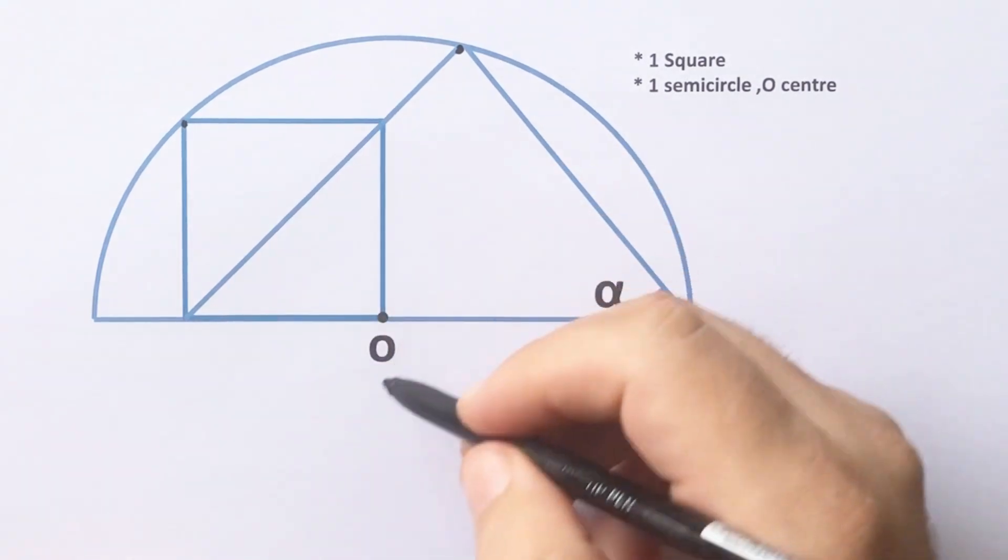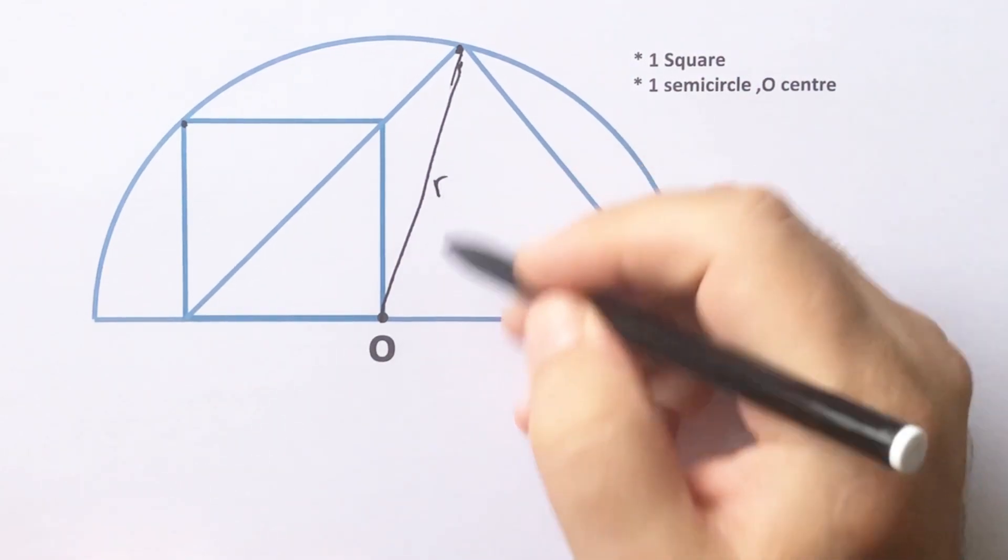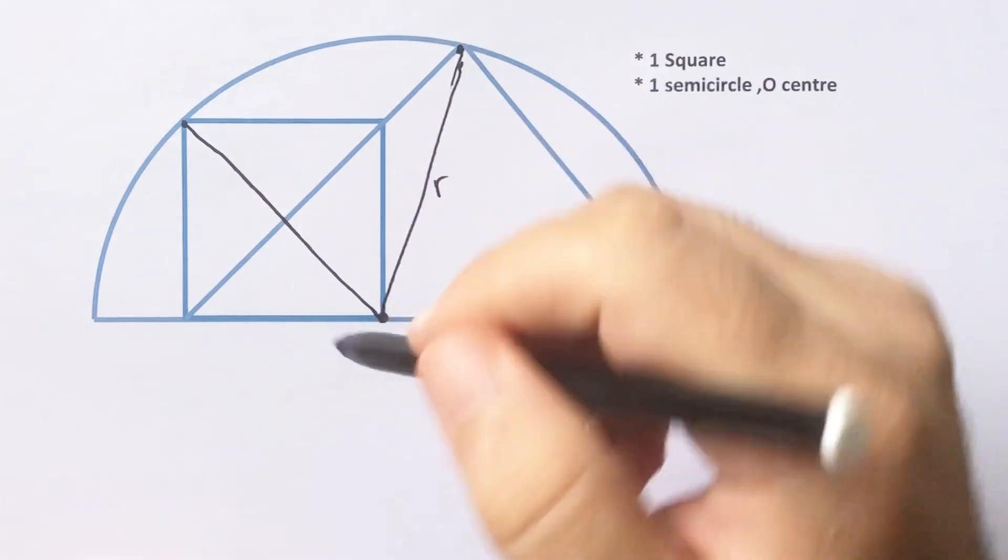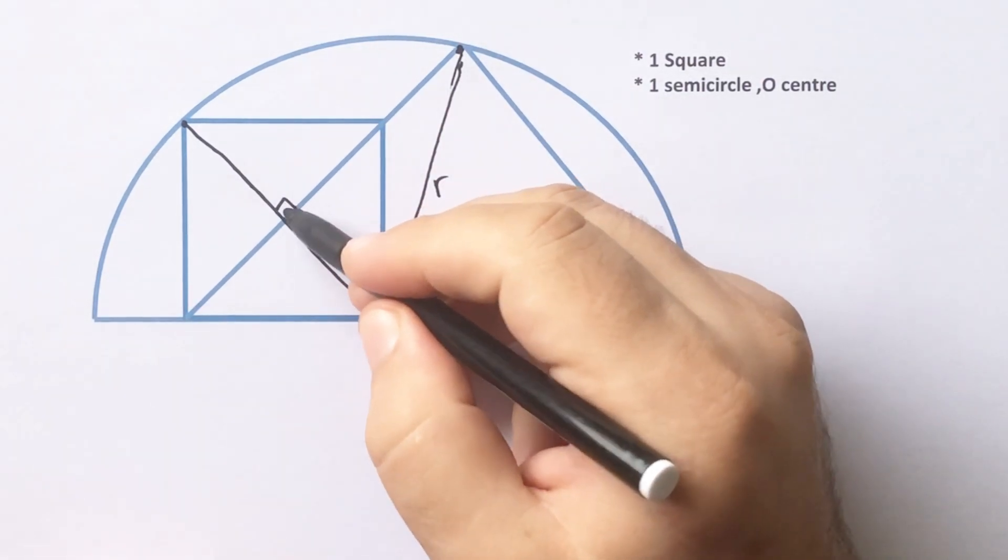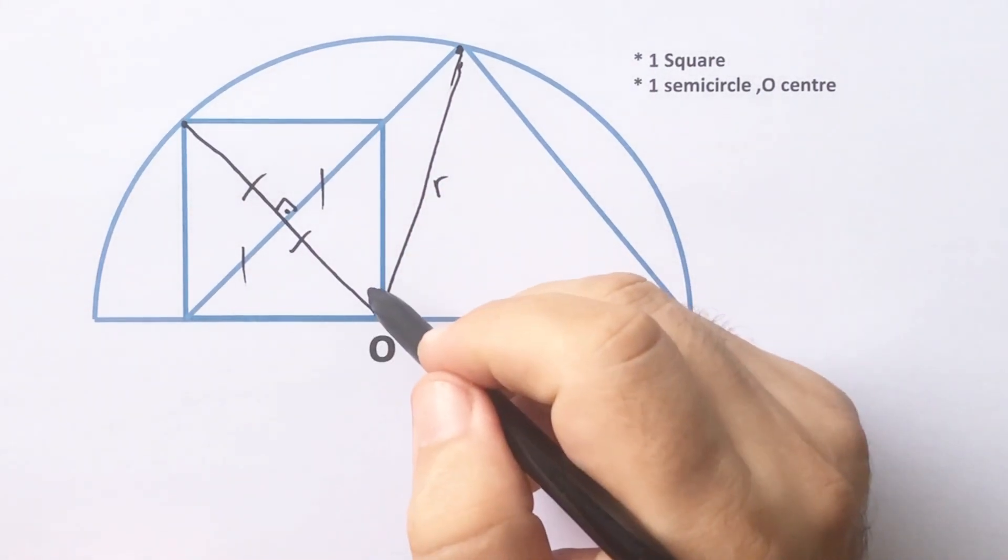if we connect center with these two points, these two lengths must be radius, right? And then here must be 90 degrees and these four parts must be equal, right?